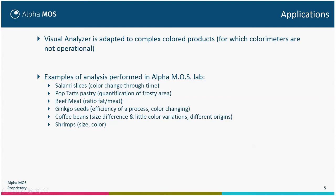These are some examples of applications that can be done using the system. We have analyzed salami slices to evaluate color change through time, pop-tarts pastries to quantify the proportion of frosted area, beef meat to quantify the ratio of fat and lean, Jinko seal for process efficiency and color changing, coffee beans for size difference and light color variation of different origins, and strips for size and color analysis.